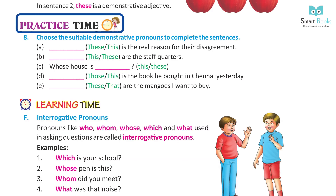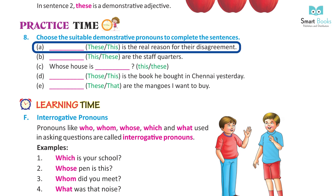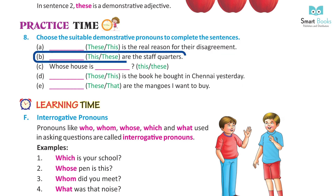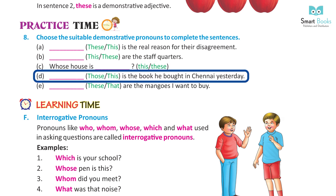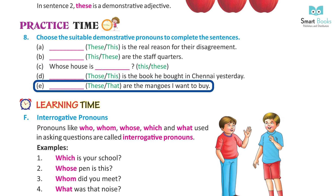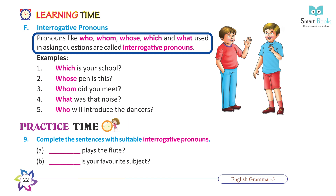Practice time — choose the suitable demonstrative pronoun to complete the sentences. A: This is the real reason for their disagreement. B: These are the staff quarters. C: Whose house is this? D: This is the book he bought in China yesterday. E: These are the mangoes I want to buy.